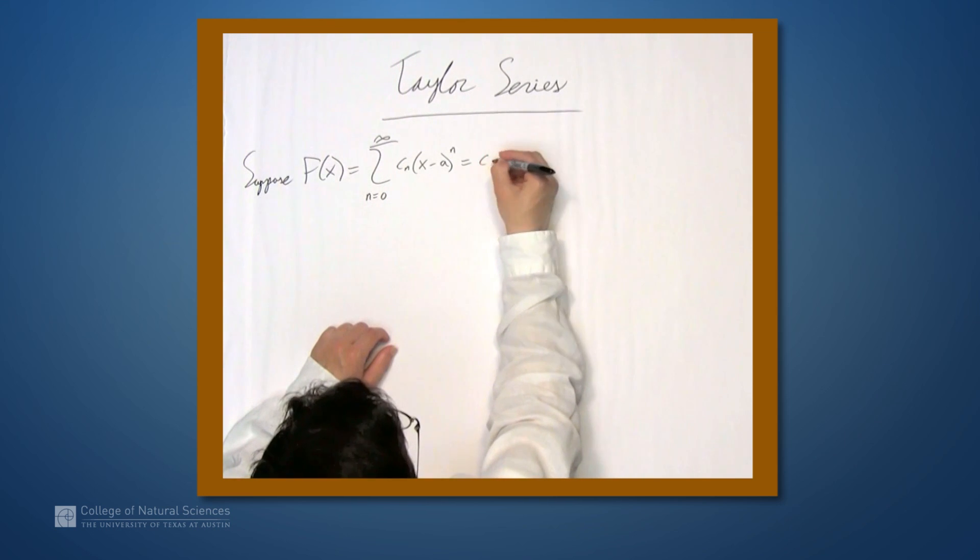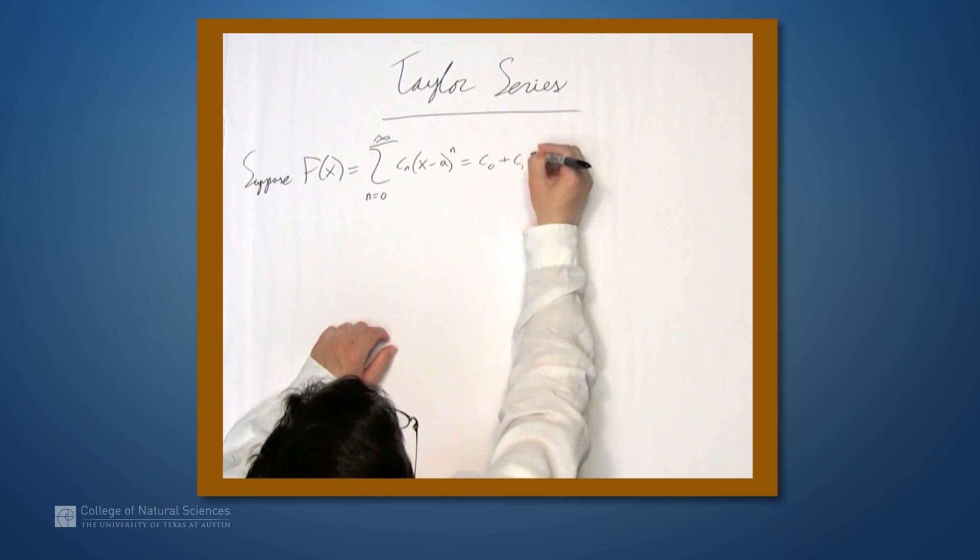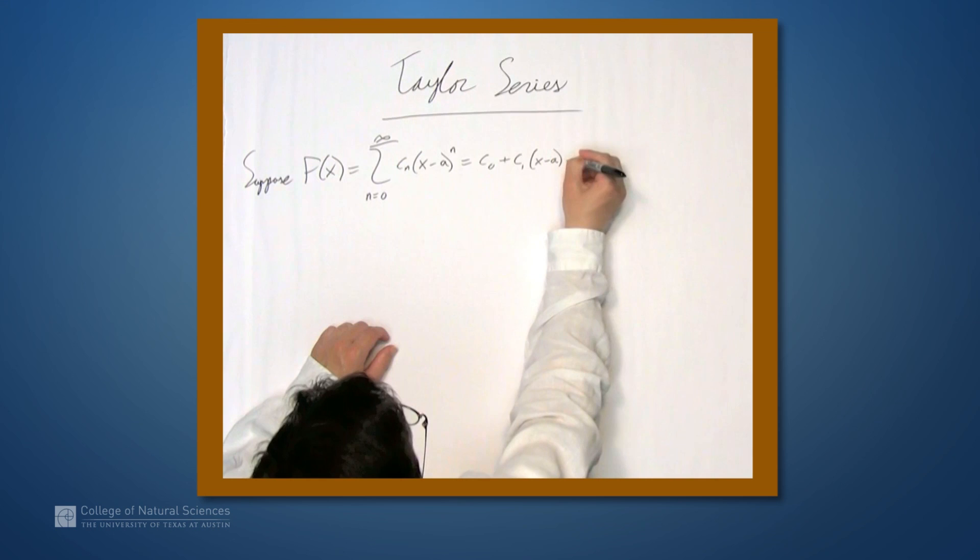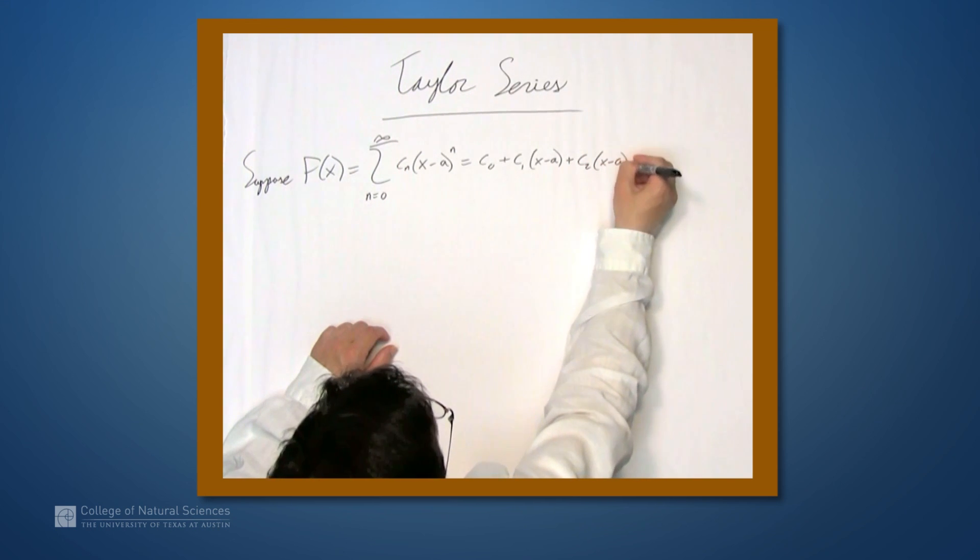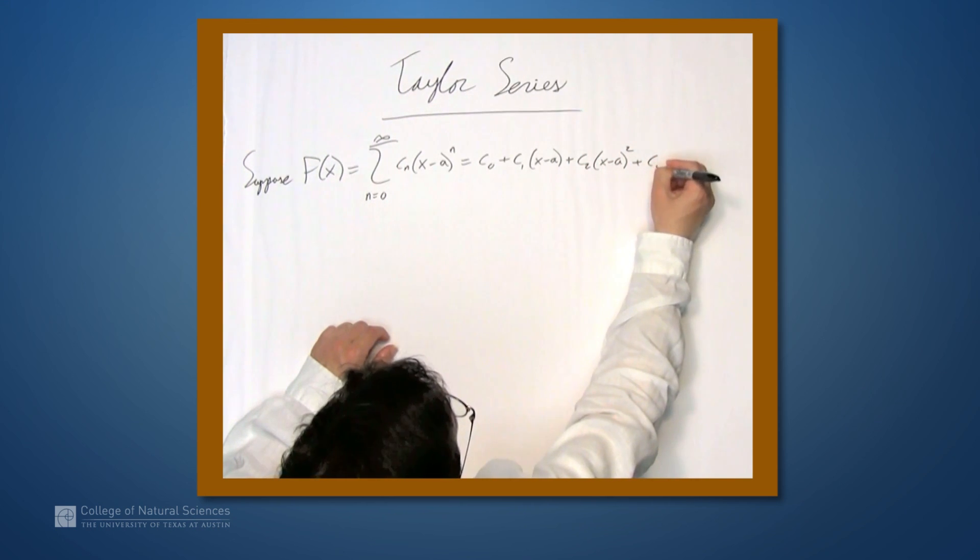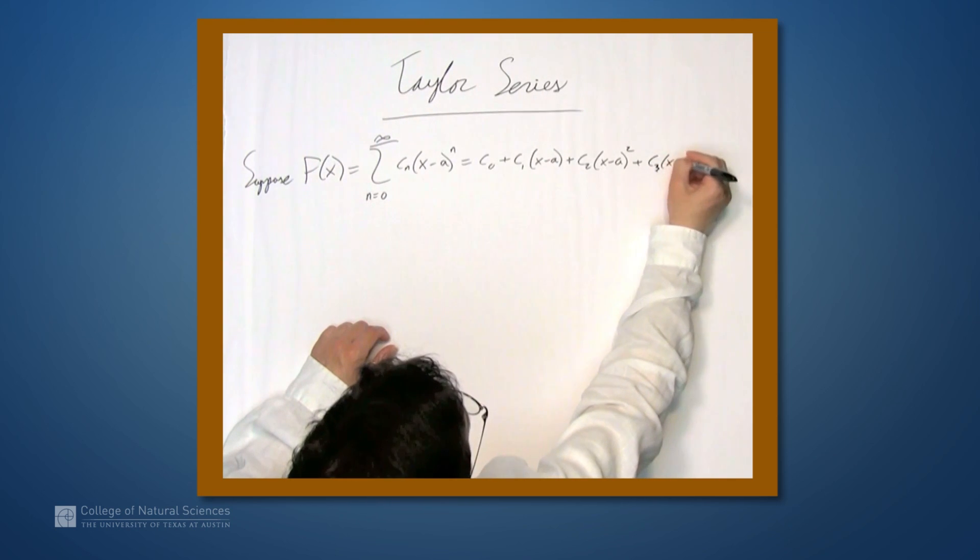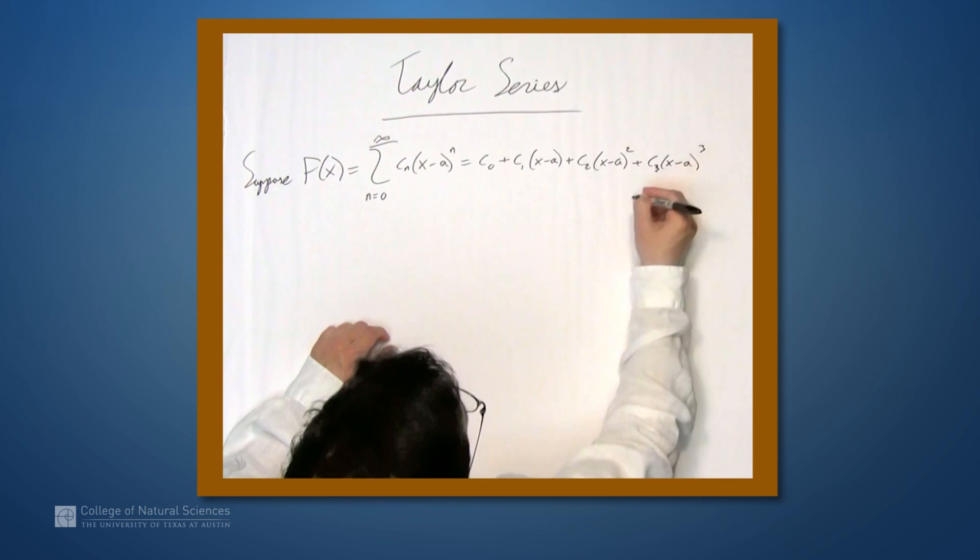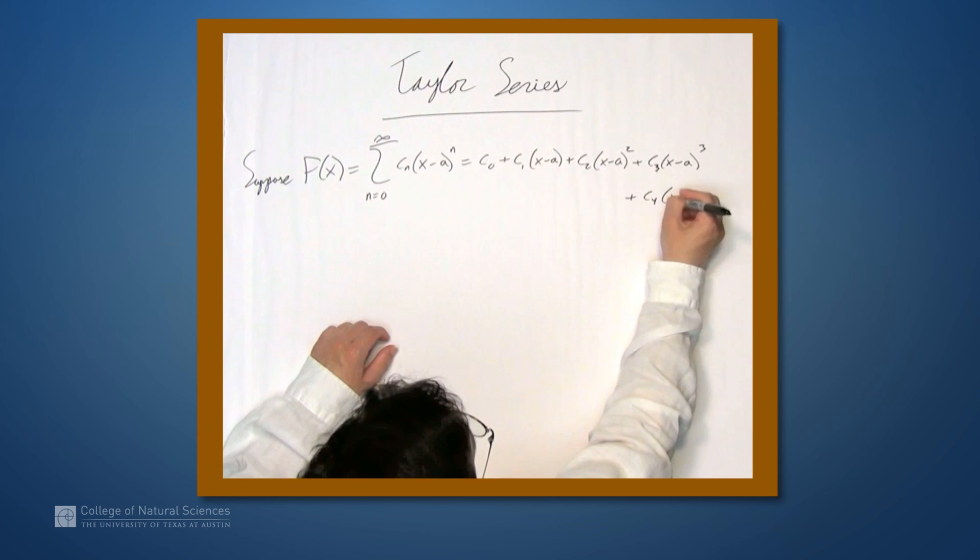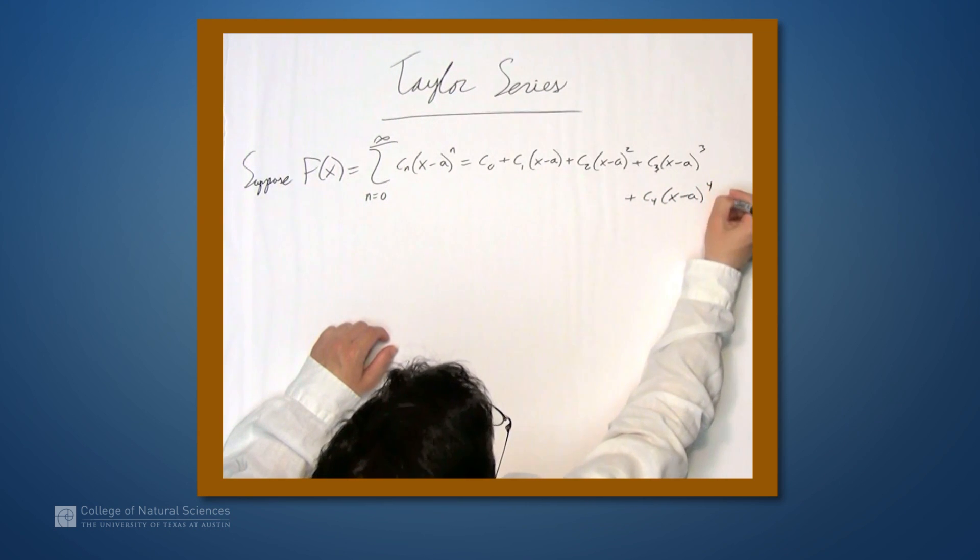Let's write out a few of these terms. This is c0 plus c1 times x-a plus c2 times x-a squared plus c3x-a cubed plus c4x-a to the fourth, and so on.